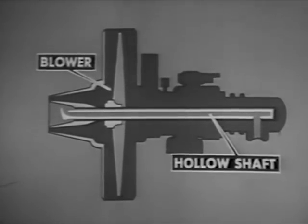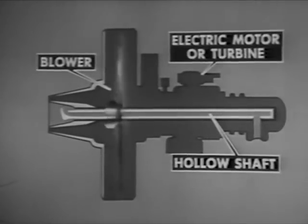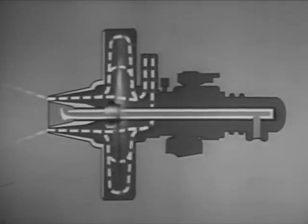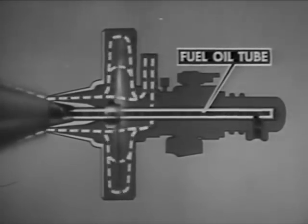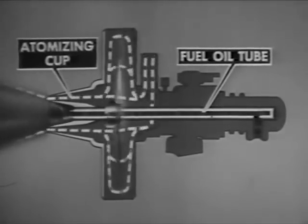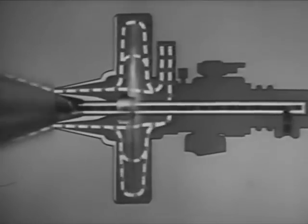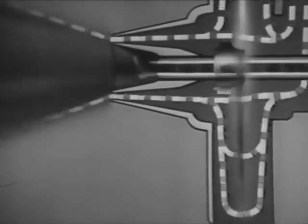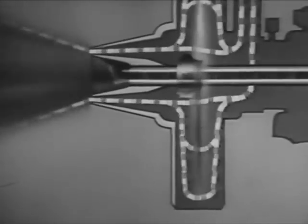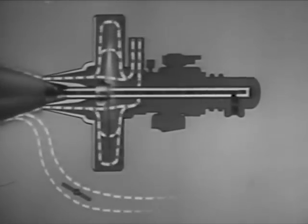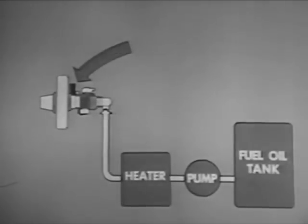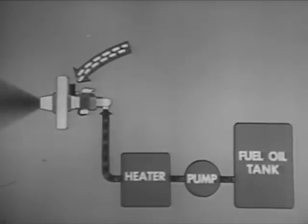In the rotary cup burner, a fan or blower is mounted on a hollow steel shaft. An electric motor or steam turbine turns the shaft and blower at high speed, providing a blast of air around the burner nozzle. The oil, under low pressure, enters through a stationary fuel oil tube inside the rotating hollow shaft and is discharged into the rotating atomizing cup. Centrifugal action forces the oil against the inner surface of the atomizing cup and causes the oil to leave the rim as a hollow cone. The meeting of the oil and the air from the blower further atomizes the oil. Additional air needed for proper combustion enters through an air door in the furnace wall. As in all burners, you control the firing rate by controlling the amount of fuel oil and air going to the burner.